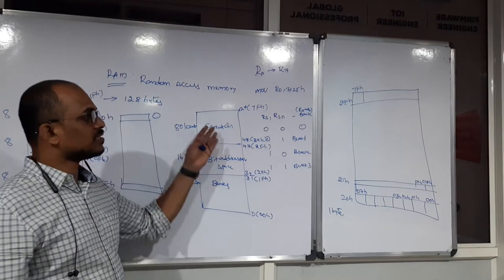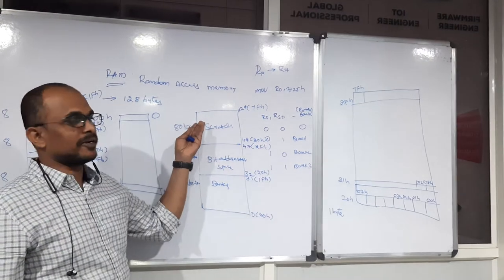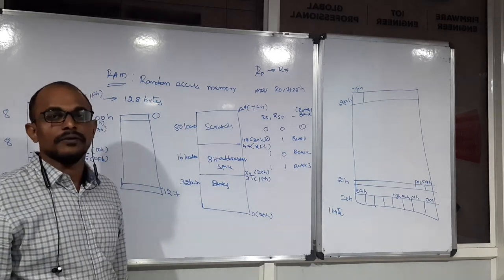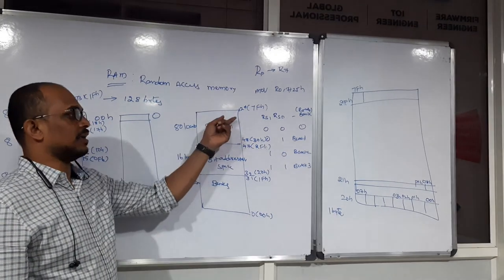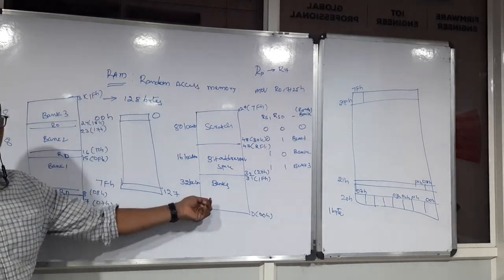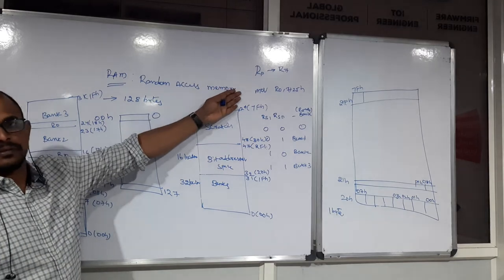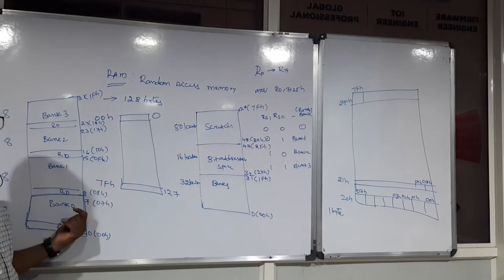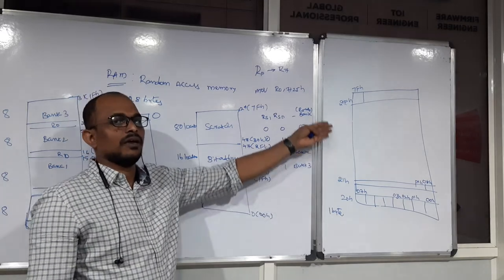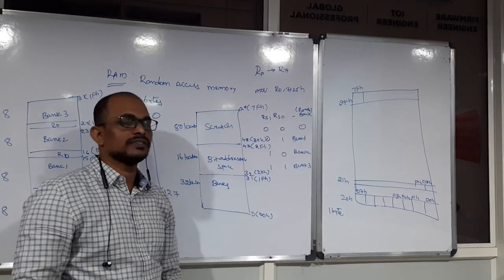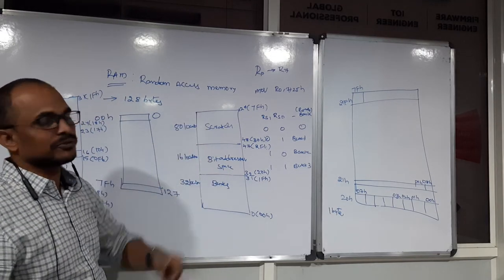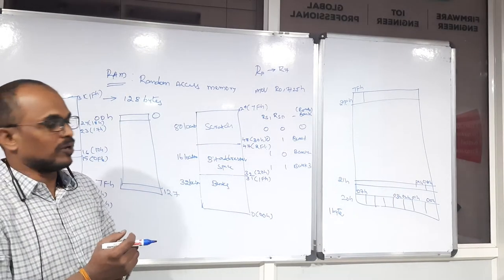The third section is Scratch Pad Memory. This scratch pad memory helps you to store your data using direct-only addresses. The first section, Banks, can be accessed with register names or addresses. The second section, Bit Addressable Space, helps to work with single bit locations. The third section, Scratch Pad Memory, allows you to store your data in a normal way using direct addresses only.